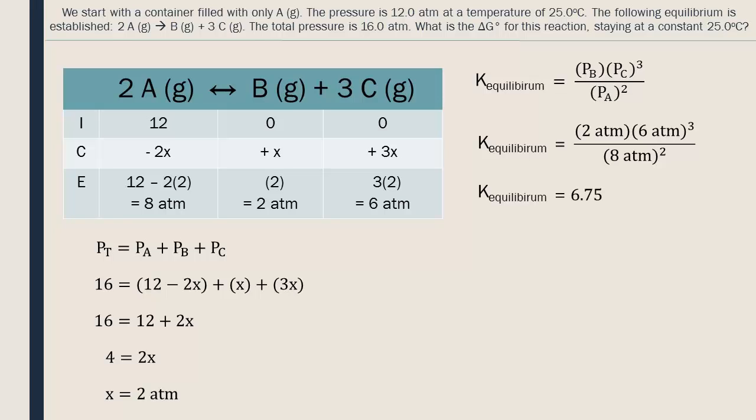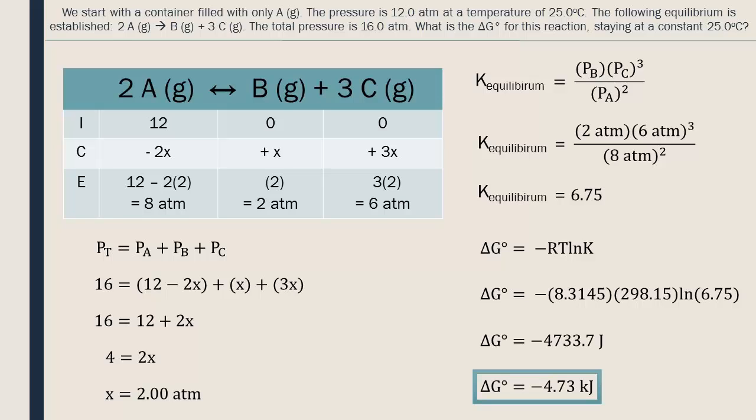To go from the equilibrium constant to delta G, we use the following equation. Putting in the values gives us an answer in kilojoules, and we round to 3 digits because all the data we put into the equation had 3 significant digits.